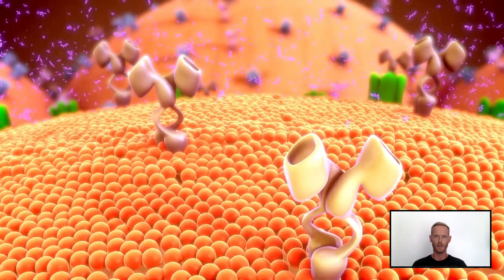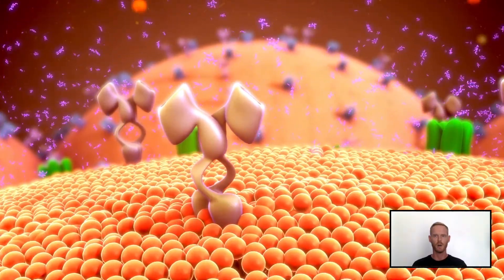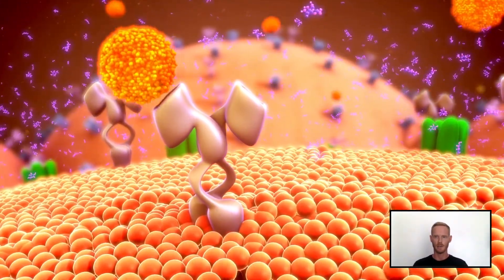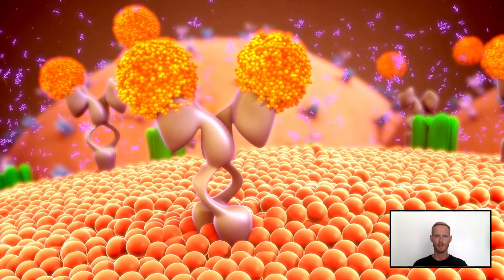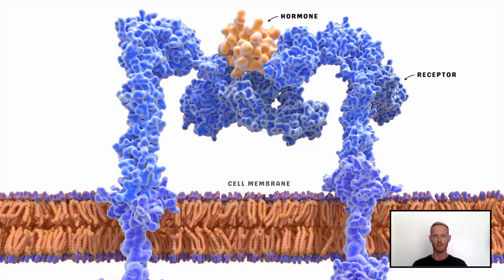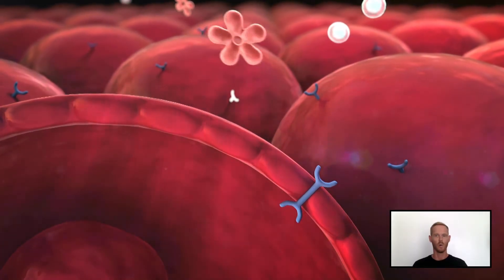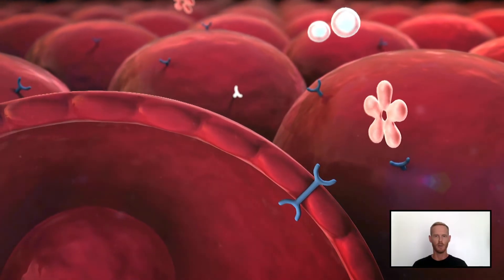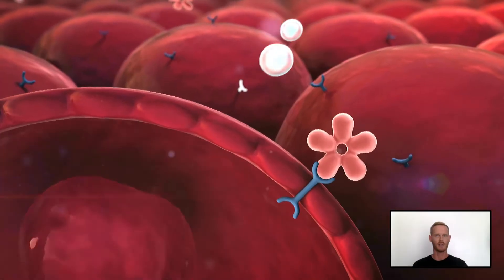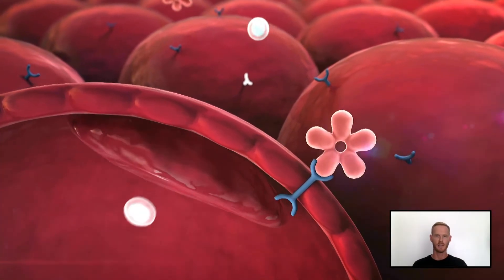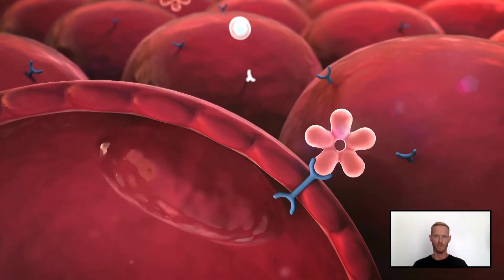A given hormone will only bind to and stimulate one kind of receptor, as both hormones and receptors have specific shapes. This means that although the hormone comes into contact with all the tissues of the body, it only affects the functioning of certain target organs. When a hormone reaches its target organ, or organs, it binds to its complementary receptors, which triggers changes in the cells and alters the activity of the organ.